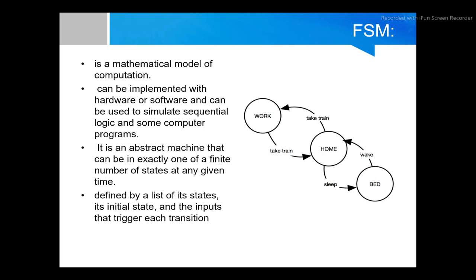FSM stands for Finite State Machine. It is a mathematical model of computation that can be implemented in hardware or software, and can be used to simulate sequential logic and some computer programs. It is an abstract machine that can be in exactly one of a finite number of states at any given time, and can be defined as a list of its states, its initial state, and the inputs that trigger each transition.